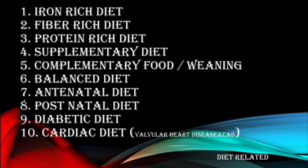Coming to diet-related topics: iron-rich diet, fiber-rich diet, protein-rich diet, supplementary diet, and complementary food or weaning. Complementary food is when we stop exclusive breastfeeding for the child after six months and start giving complementary feed along with breastfeed.